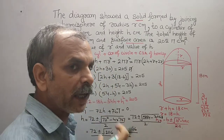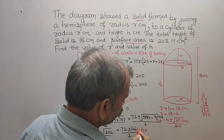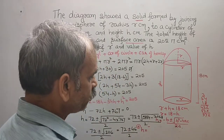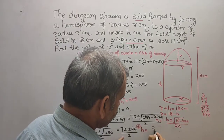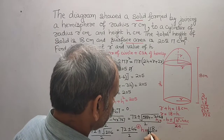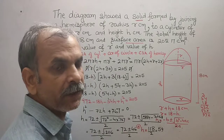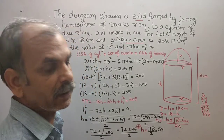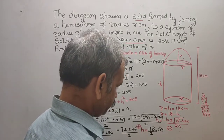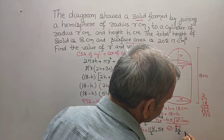Taking the positive case: h = (72 + 46) / 2 = 118 / 2 = 59. Taking the negative case: h = (72 − 46) / 2 = 26 / 2 = 13.